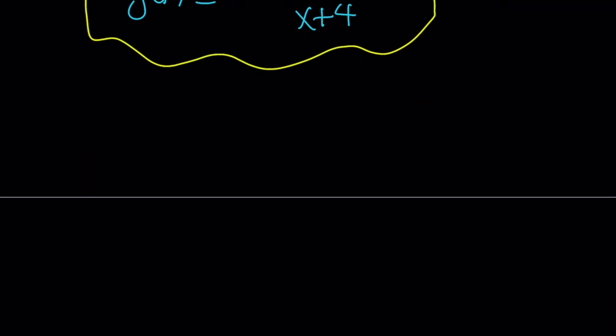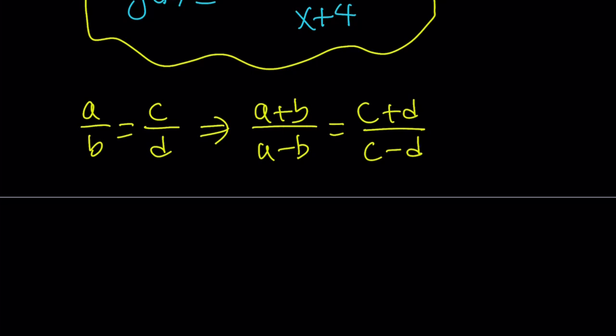So let's look at the second approach. The second approach has a special name. It's called componendo dividendo. I really like the way it sounds. This is how componendo dividendo works. If you have a over b equals c over d, then this implies a plus b over a minus b equals c plus d over c minus d. This is very easy to prove, by the way.